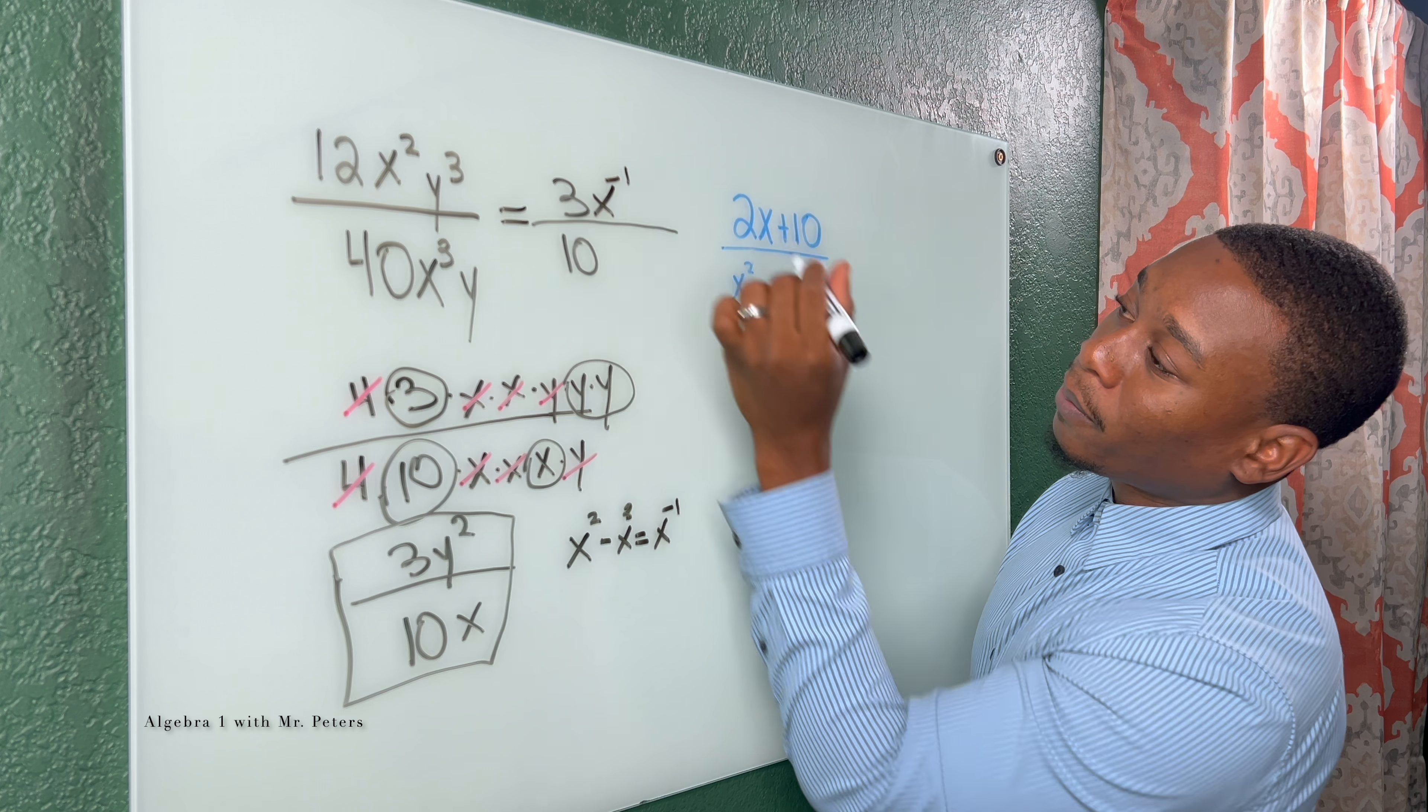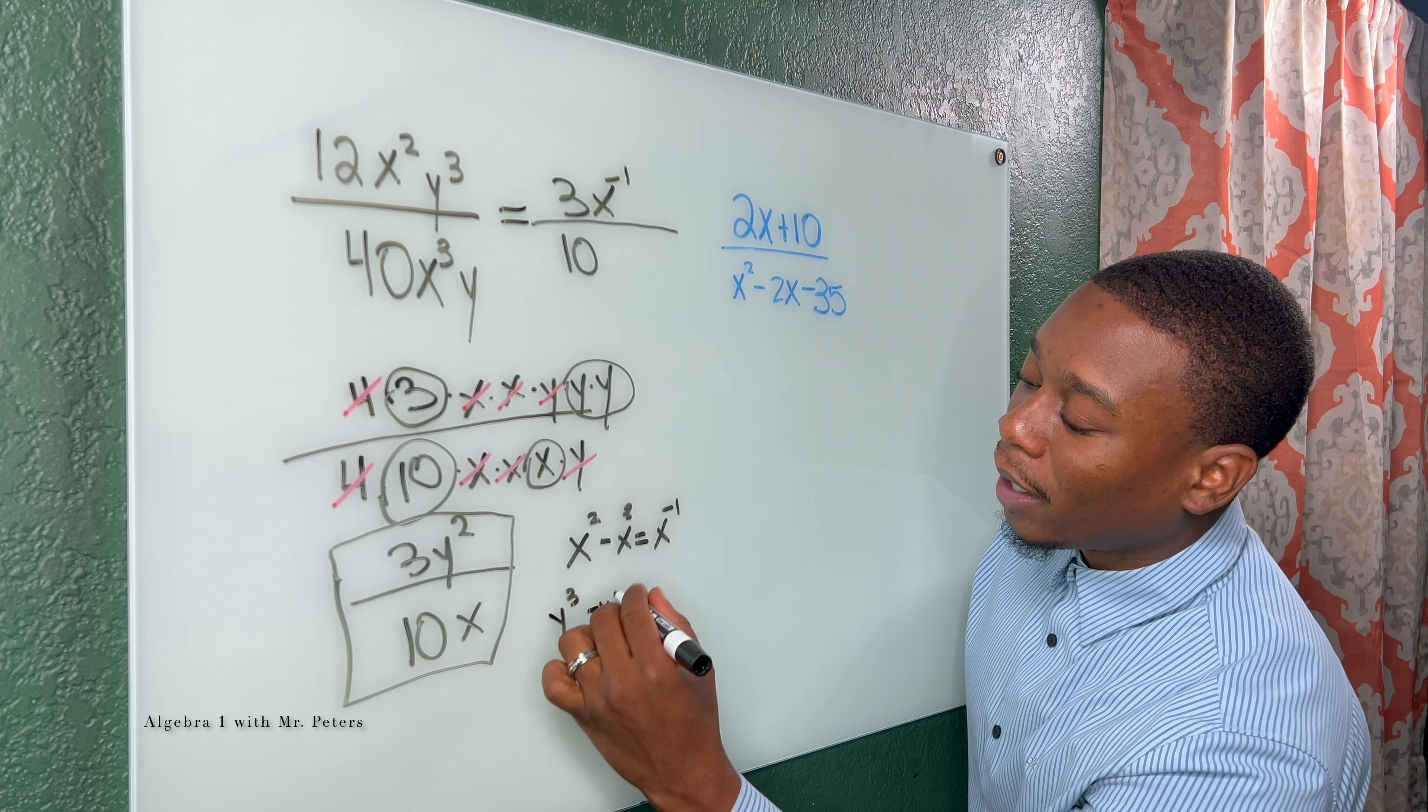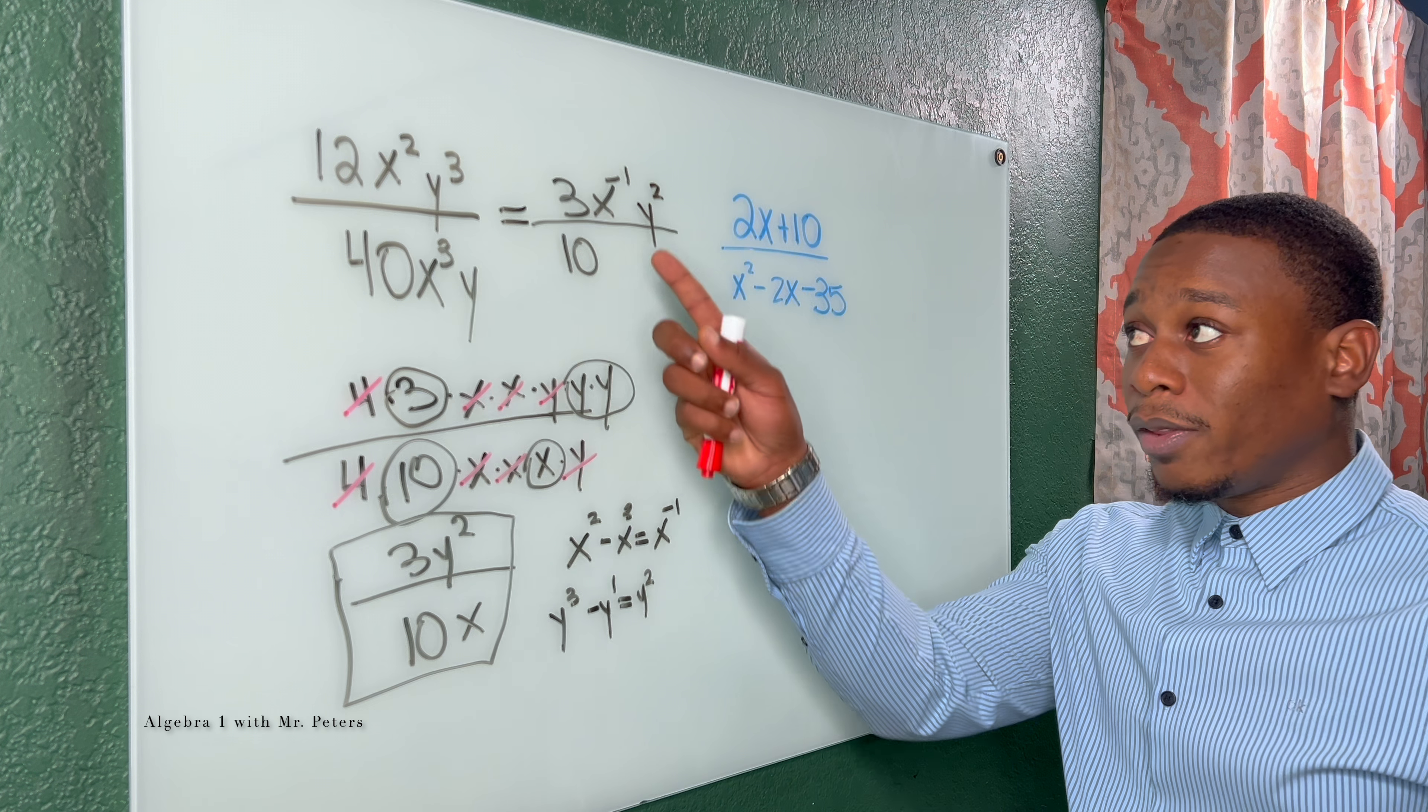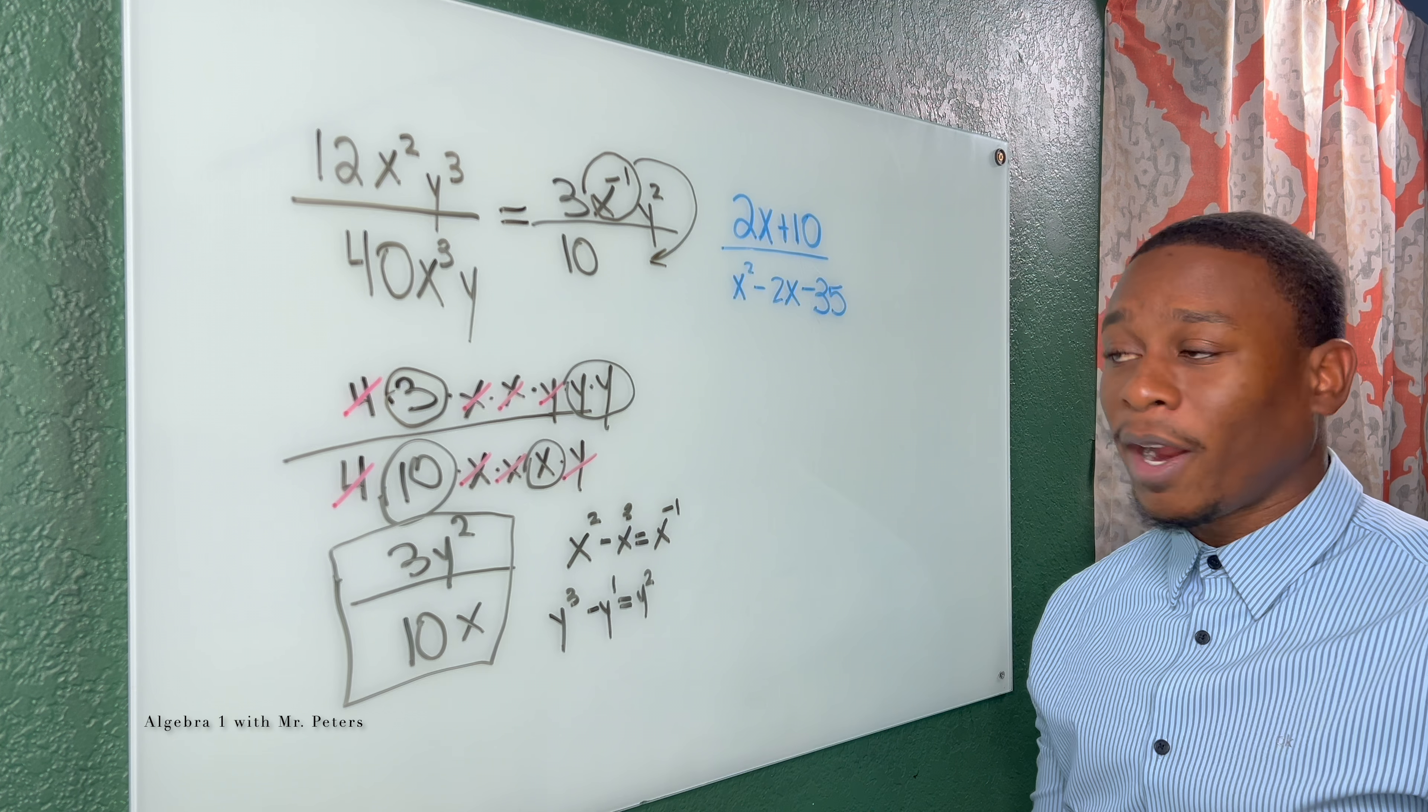This is at the top. Then when we do the same thing with the y, we have y to the third minus y to the first power, which gives us y squared. Now the issue with this is we have a negative exponent. And what we have to do is bring it down to the bottom of that fraction.